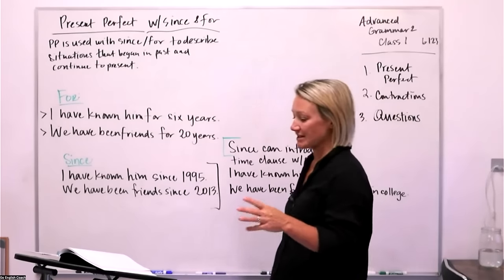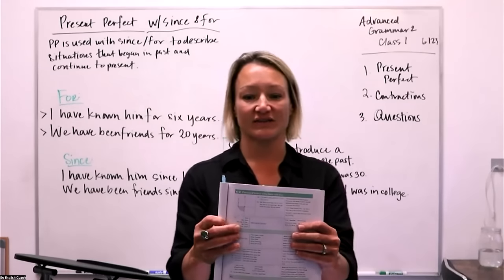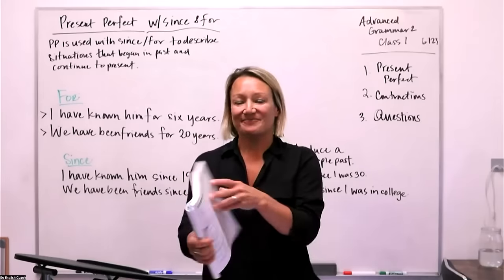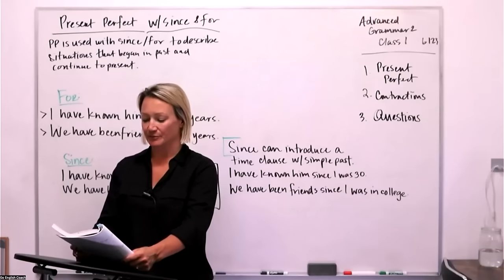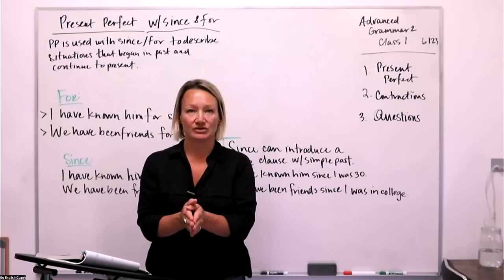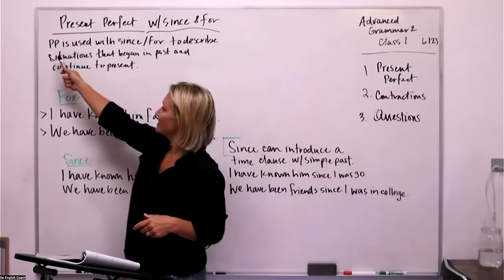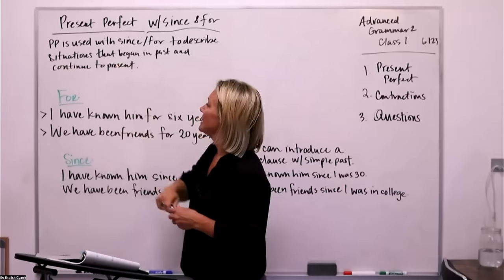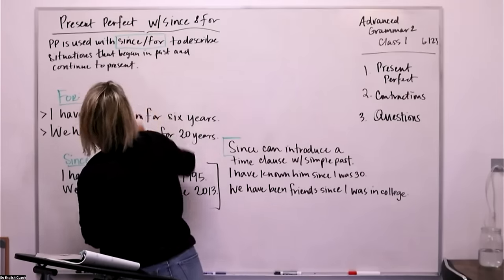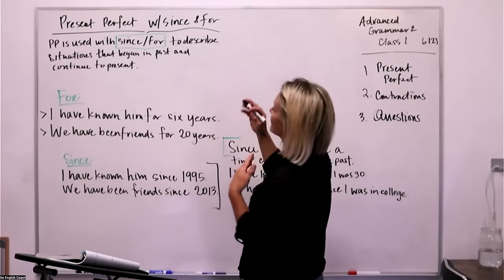So the present perfect tense. One of the things I love about this book is they've got wonderful graphs. When we use the present perfect tense, it's used to express situations that began in the past and continue to today. So that's when we're using this present perfect with 'since' and 'for.' The present perfect is used with 'since' and 'for' to describe a situation that began in the past and continues to the present.